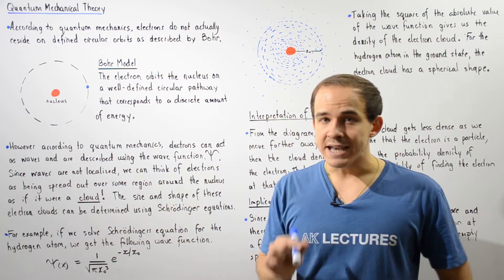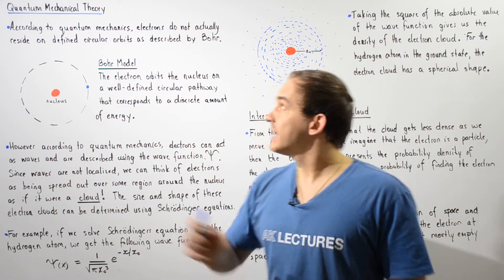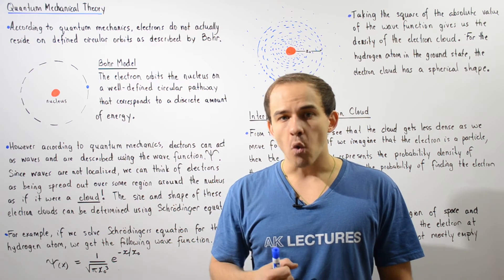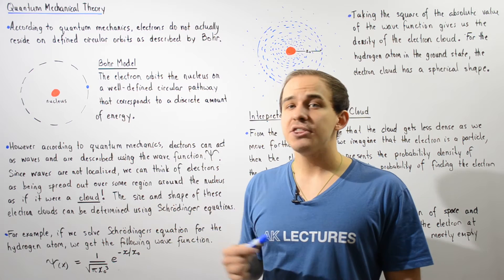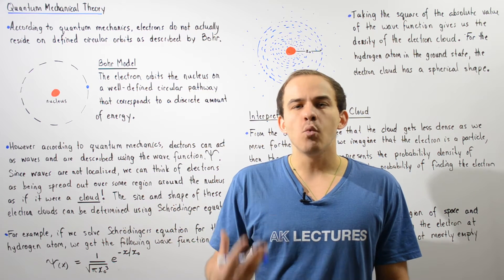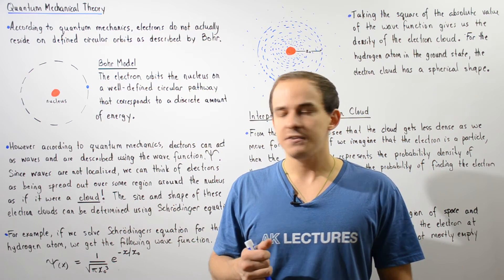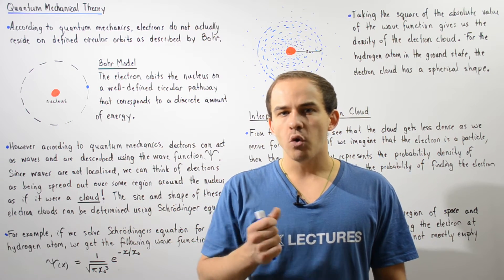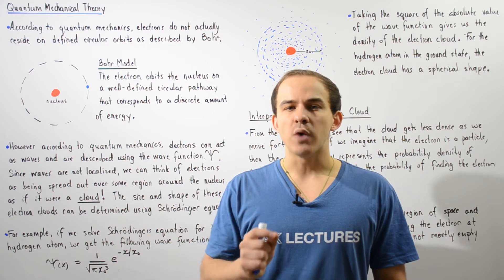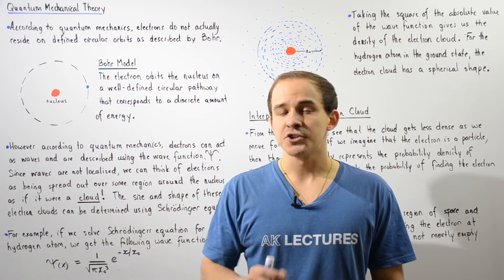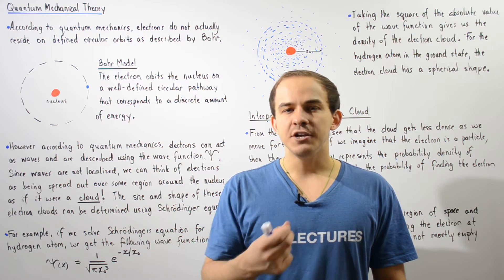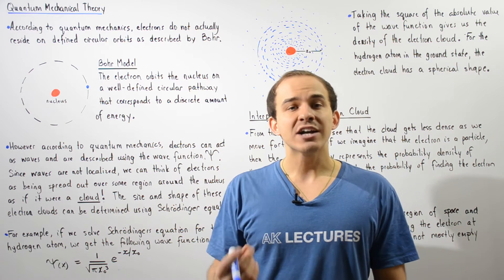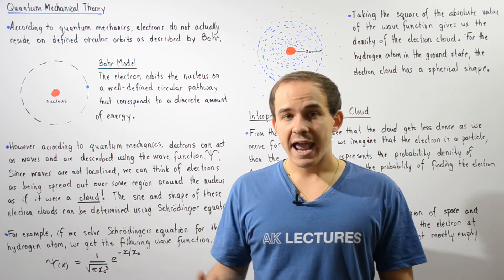According to quantum mechanics, electrons do not actually reside on defined circular orbits as described by the Bohr model, because of the wave-particle duality of nature. In quantum mechanics, electrons do not only act as particles but can also act as waves. We use a wave equation known as the wave function, given by the Greek symbol psi, to describe the motion, behavior, and location of our electron.